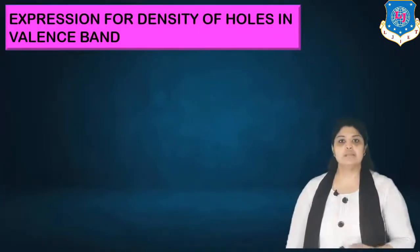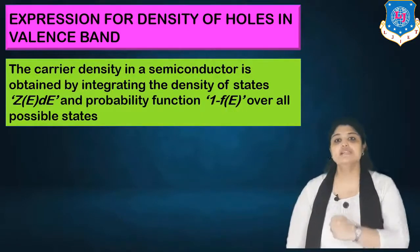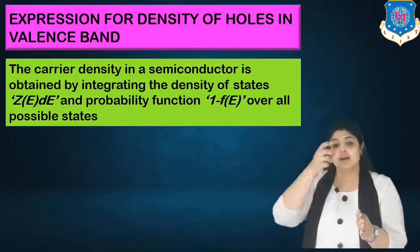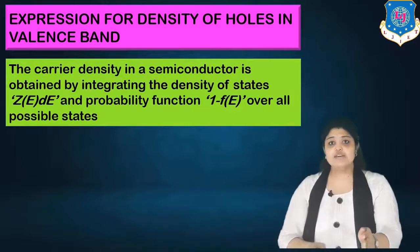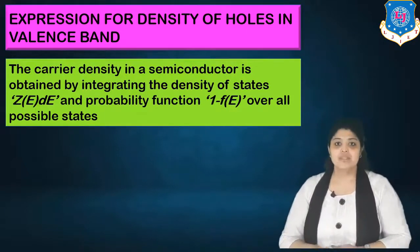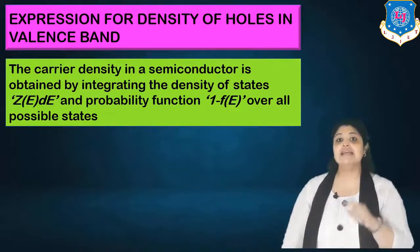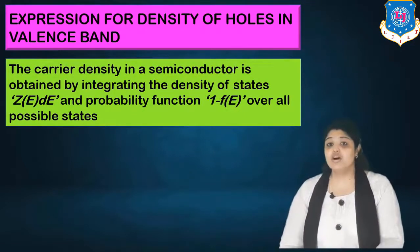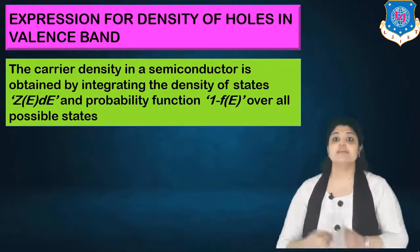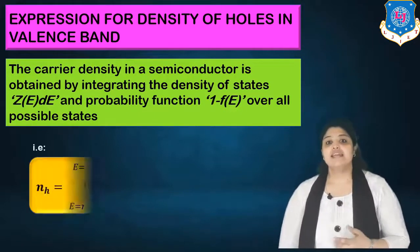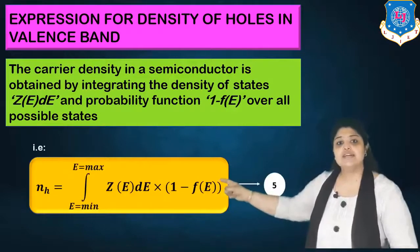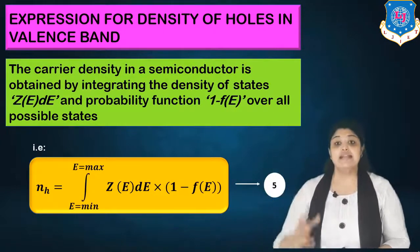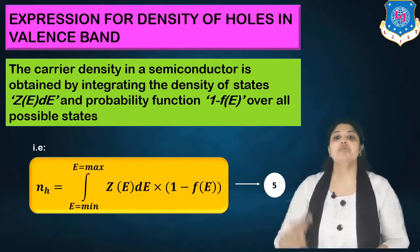Moving to the second part — the expression for density of holes in the valence band. A hole is the absence of an electron, so if the probability of an electron is F(E), the probability of a hole is 1 − F(E). Carrier density for holes is obtained by integrating the DOS Z(E)dE multiplied by the probability function (1 − F(E)) over all possible states. Z(E)dE gives the density of states for holes, and (1 − F(E)) gives the probability function of holes.